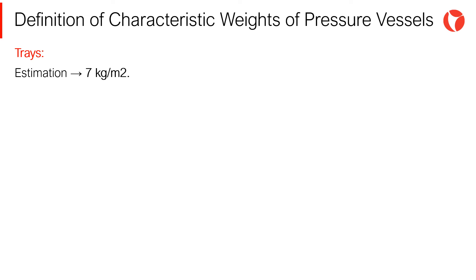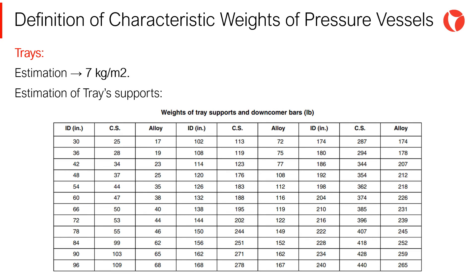A basic estimation for trays could be 7 kg per square meter of internal trays. Also, there are some other charts and indicative tables that provide an estimation for tray supports, such as the one that is shown on the screen.